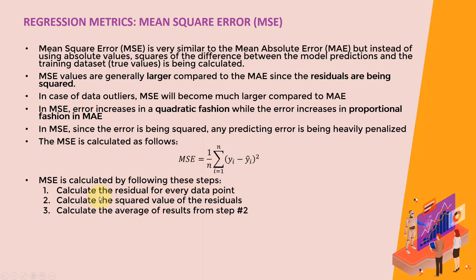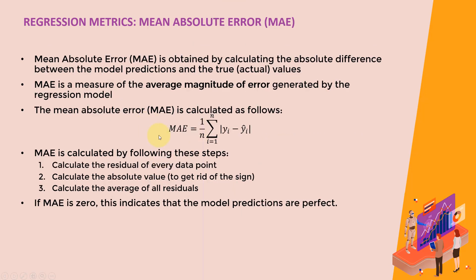The error increases in a quadratic fashion with MSE, while it increases proportionally with MAE. The steps are: calculate the residual for every data point, calculate the square value of the residual, then calculate the average by summing and dividing by the overall number of samples. Since we are squaring the error, any prediction error will be heavily penalized — even a small error becomes much larger in a quadratic fashion.